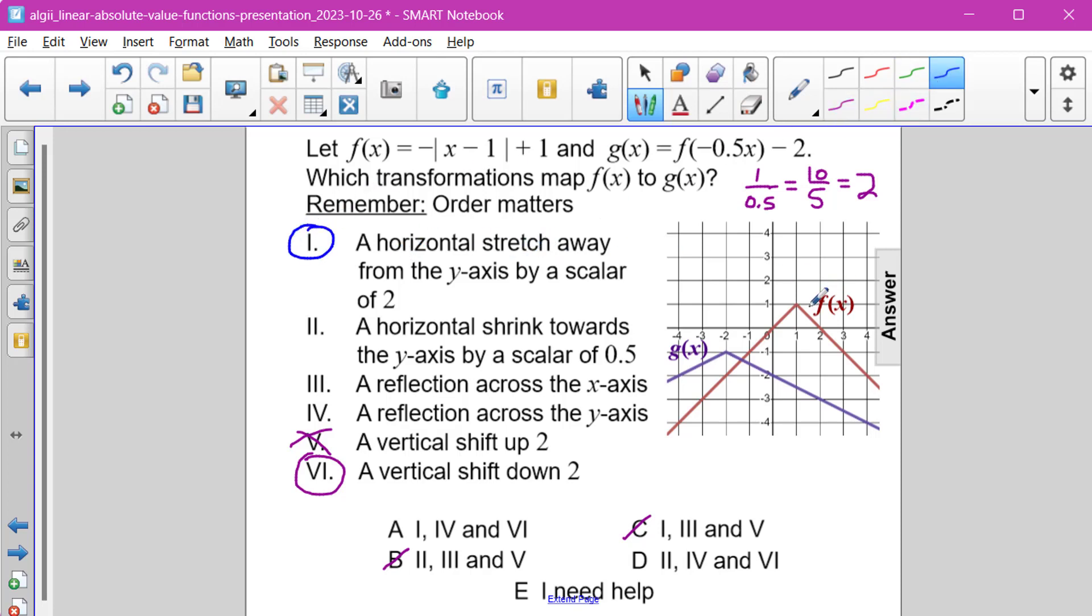So that's happening first. Our y-intercept at the origin is going to stay the same. But instead of having a vertex of 1, 1, the new vertex is going to be 2, 1. And then it's going to be a horizontal stretch away from the y-axis by that scalar of 2.